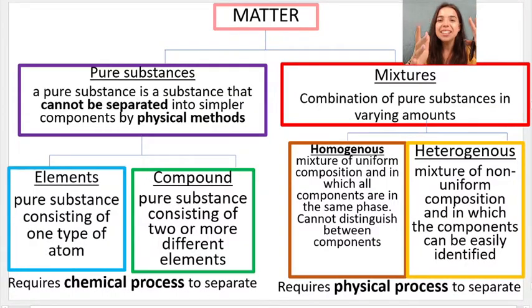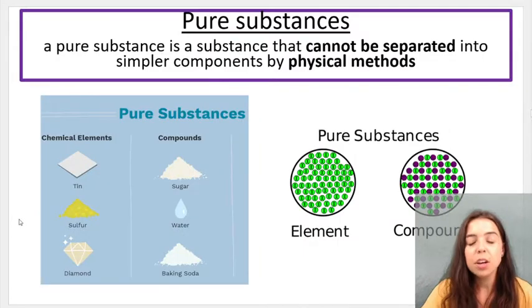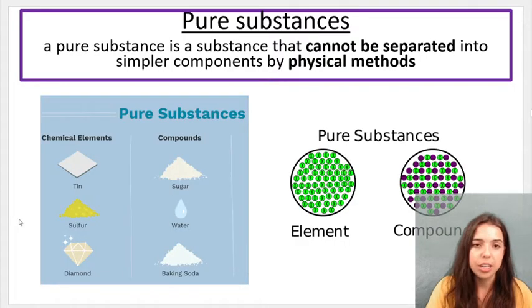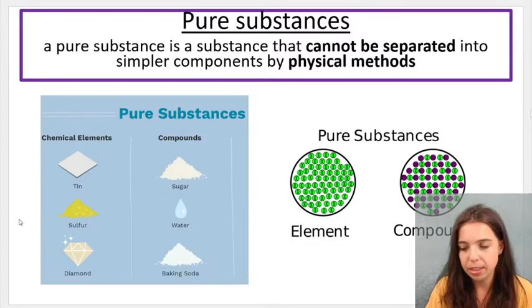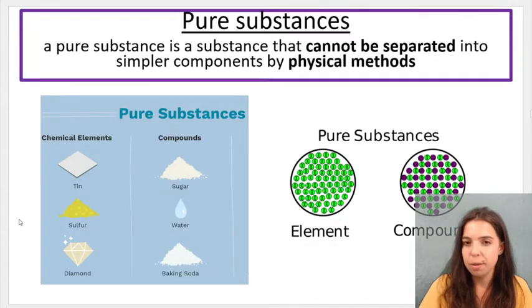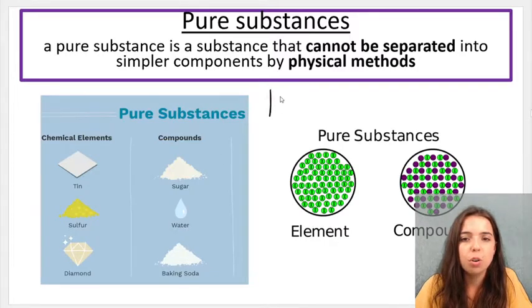This little mind map over here is basically just an expansion on the previous one I showed you. And what I've added in this mind map are the definitions. So how can I define a pure substance or a mixture? So a pure substance essentially is something that cannot be separated into simpler components by physical methods. So just to let you know what that means. For example, if I take H2O,